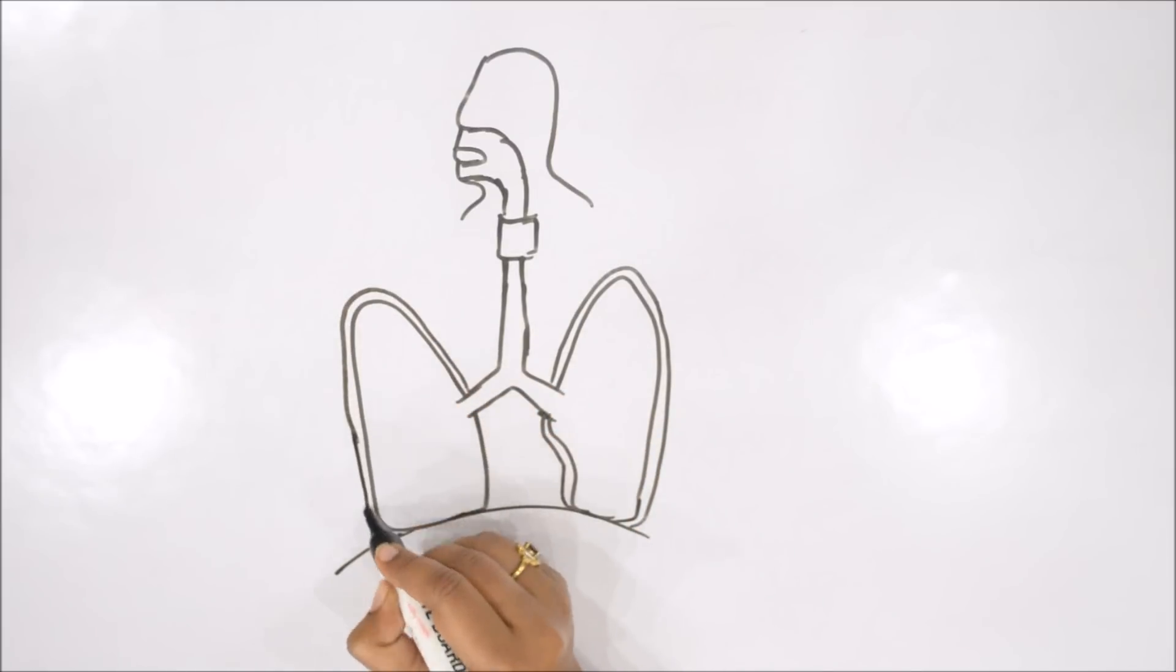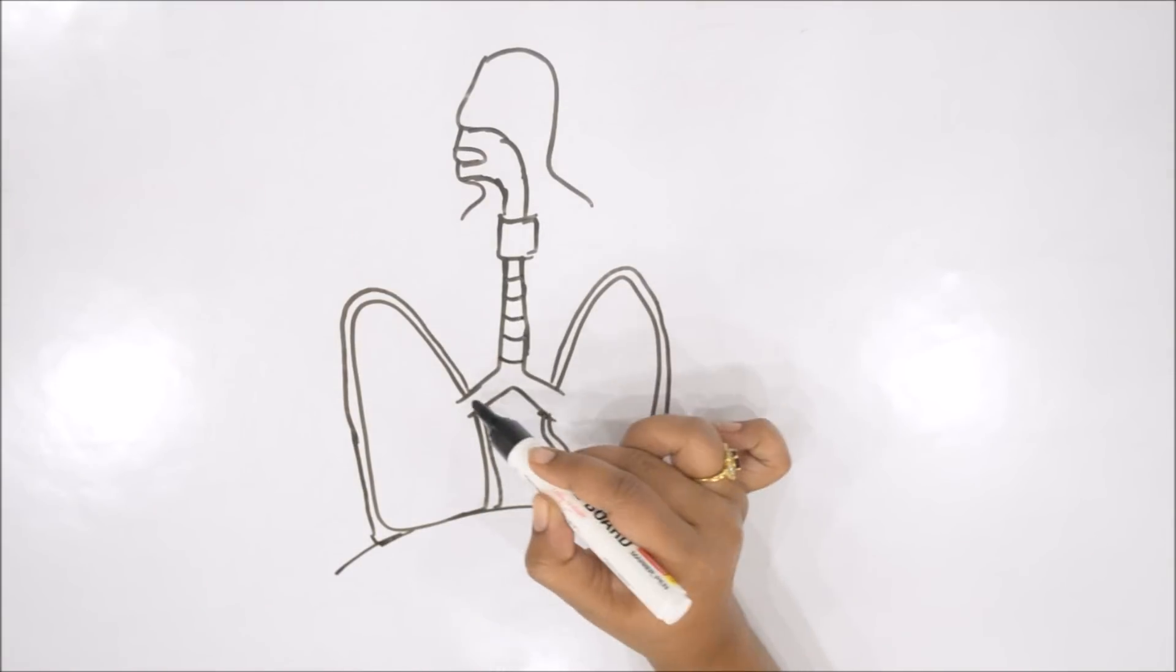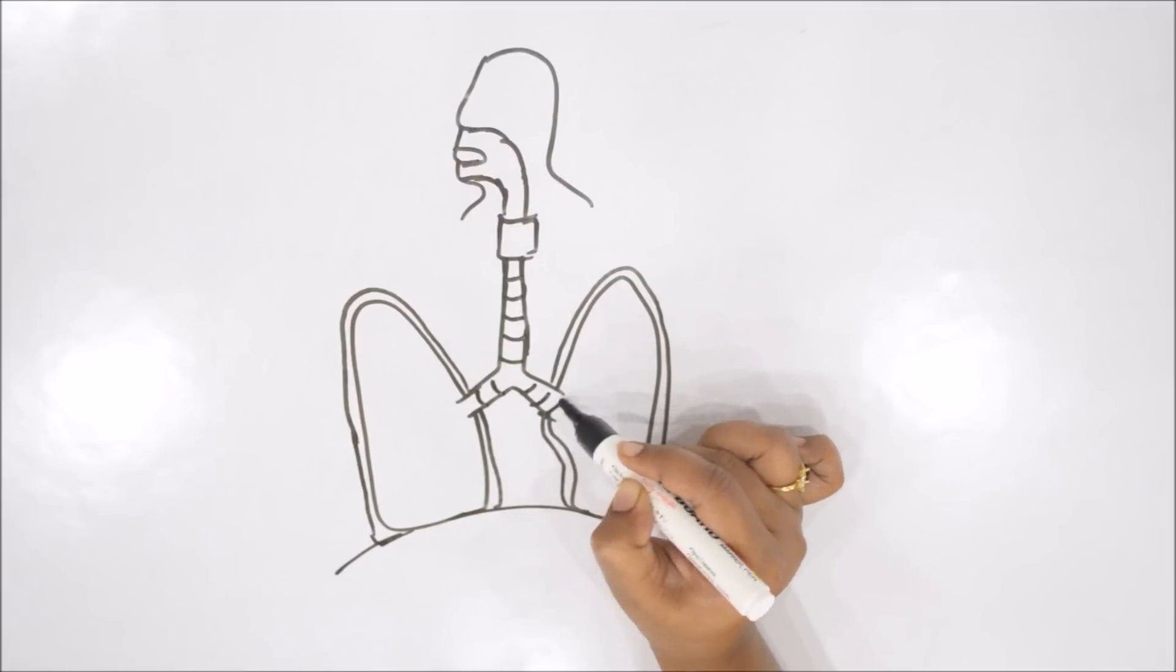Outer one is called parietal pleura and the inner one is called visceral pleura. We will see later on. There are C-shaped cartilage rings to prevent the collapsing of trachea when there is less air in it.